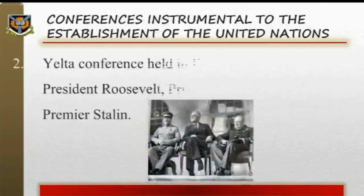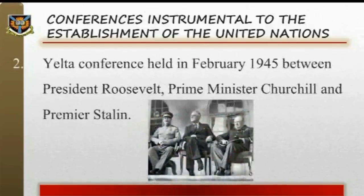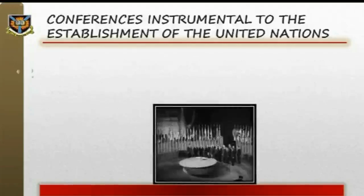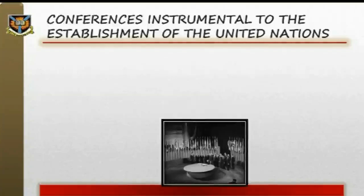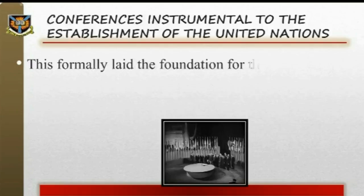2. The Yalta Conference, held in February 1945, between President Roosevelt, Prime Minister Churchill and Premier Stalin, culminated in the declaration on the 11th of February 1945, that a conference be called to meet in San Francisco on the 25th of April 1945, to prepare the Charter of the United Nations, along the lines proposed by the Dumbarton Oaks Conference. 3. On the 25th of April 1945, in San Francisco, 51 nations attended the United Nations Conference. This formally laid the foundation for the birth of the United Nations, as the 111 Articles of the United Nations Charter were drawn up at the conference.